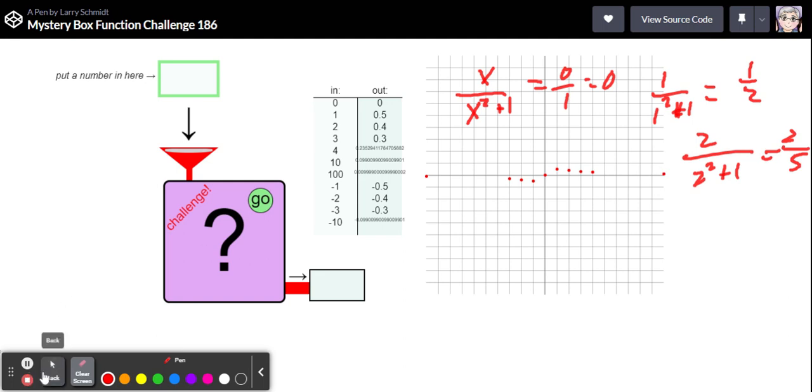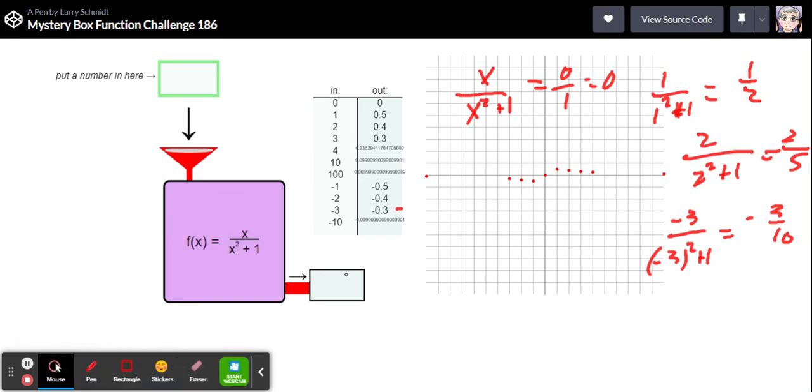Well, let's maybe try one more point. Let's put in a negative three and see what we get here. So that would be negative three over negative three squared plus one. So that'd be nine plus one is ten. So negative three tenths. Yep, and that is what we're getting. So I think this must be it. Let's go ahead and reveal, and there it is: x over x squared plus one, and we can graph that.